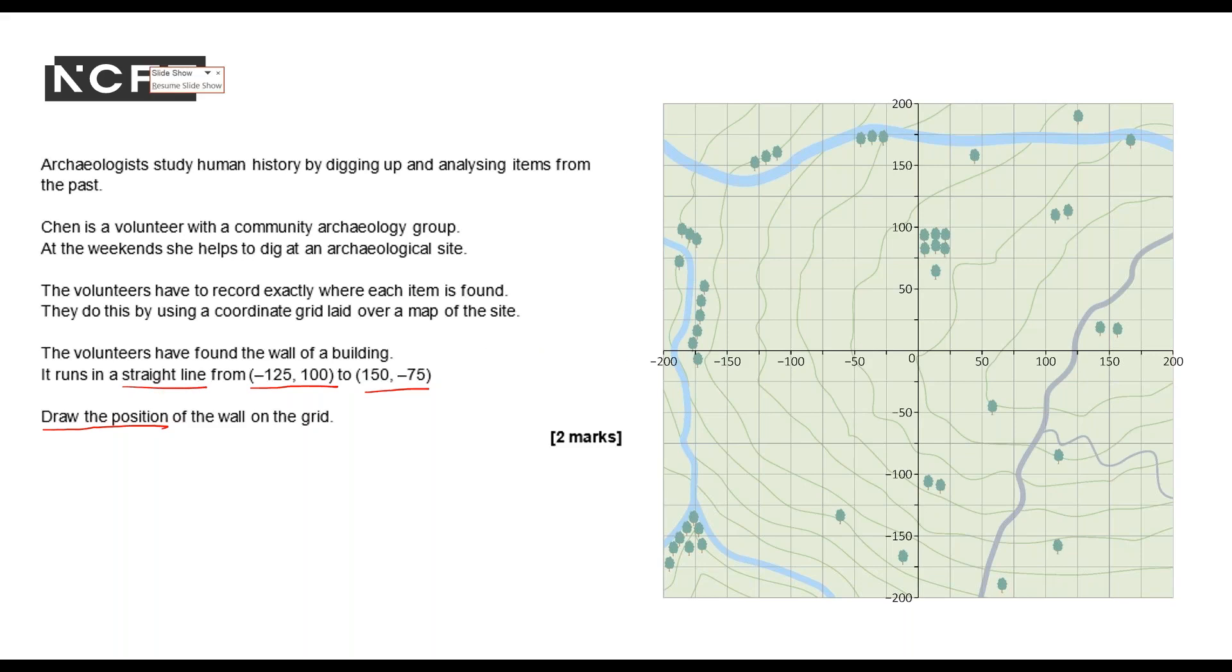So first of all I need to remember that whichever is the first coordinate, minus 125, that's my one that goes across. It always goes across first. So minus 125 to 100 gives me a point which is minus 125. So that's the middle one between the minus 100 and the minus 150 because my scale will go up in even increments and then it's 100, so it's on the positive one.